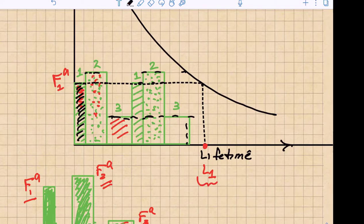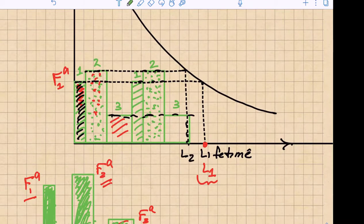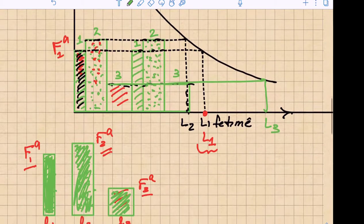For rectangle two, we come over to the curve and we identify the L2 value. And for rectangle three, we come over to the curve, it's going to be way out here, and we identify the L3 value, the 90% reliability lifetime for that given applied equivalent radial load.